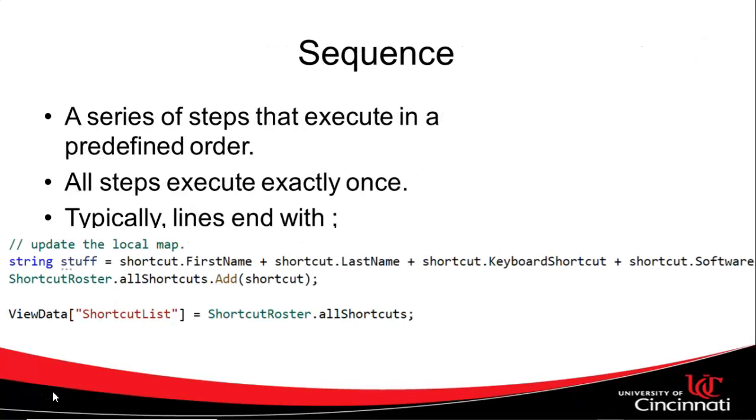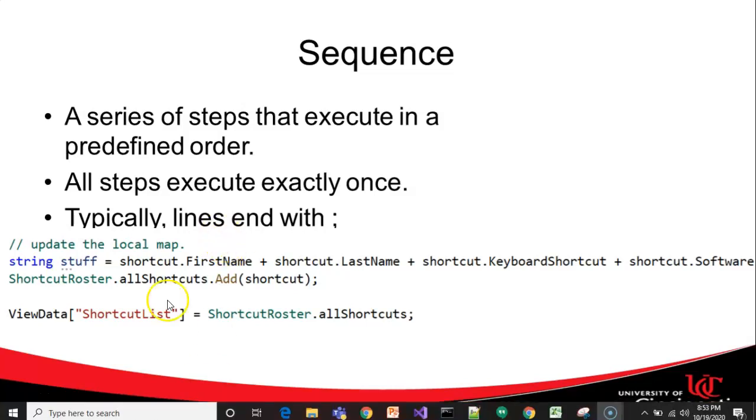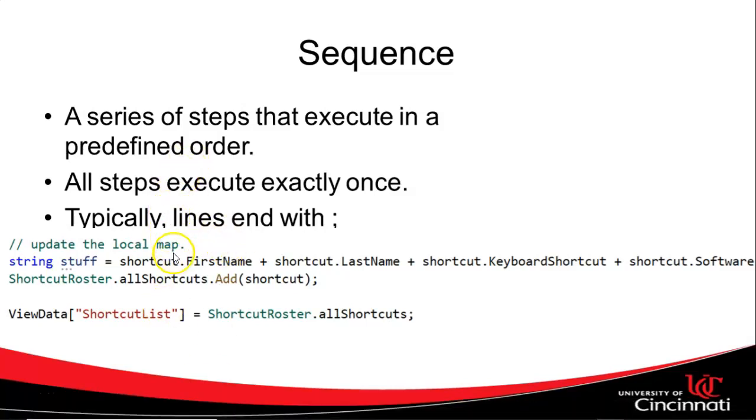So first of all, sequence. This is one of the programming concepts we use quite a bit. In this case, we will simply execute lines in a predefined order. Here's an example from our shortcuts application demonstration, where first I'm collecting some form data, putting it all together in a string. Then I take the shortcut and I add it to our collection. And then I take all of the shortcuts and I expose them to our CS HTML page.